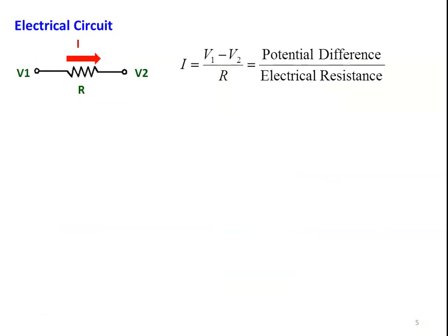We now discuss the electrical analogy. In a simple electrical circuit with resistance R: I = (V1 − V2)/R, where V1 − V2 is the potential difference and R is the electrical resistance. Now we apply the electrical analogy to heat conduction. T1 is the temperature on the left side, T2 is the temperature on the right side, Q is the heat transfer, and there is a resistance called thermal resistance.